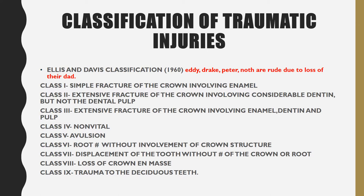Class 7 is when the tooth gets displaced without fracture of the crown or root — the tooth is displaced but not fractured. Class 8 is loss of the crown entirely. Class 9 is when there is trauma to the deciduous teeth.